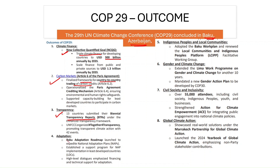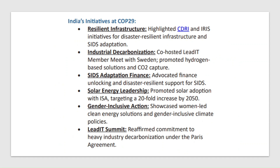Thirteen countries submitted their biennial transparency reports on actions taken regarding their Nationally Determined Contributions. The Baku Adaptation Roadmap was launched to expedite national adaptation plans among developed countries and establish support programs for least developed countries. Indigenous peoples and local communities are to be included through the Baku Work Plan. A Gender Climate Action Plan is to be developed by COP30, with 55,000 civil society attendees participating. Global climate action was showcased under the Marrakesh Partnership, and the 2024 Yearbook of Global Climate Action was launched.